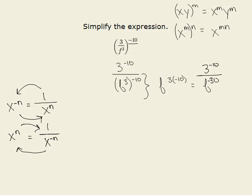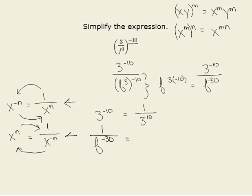So let's look at the numerator. We have 3 to the negative tenth — we have a term to a negative exponent, so we can rewrite it as 1 over that term to the same exponent, only it's positive. In the denominator, we have f to the negative thirtieth. Since it's in the denominator, we'll write a 1 over that — so we can rewrite that same term f to the same exponent, only positive.